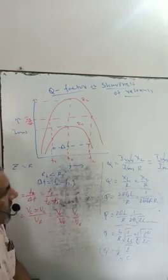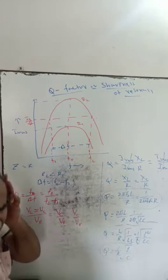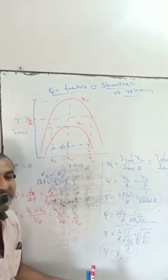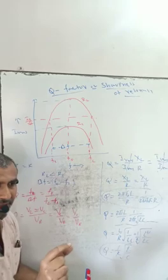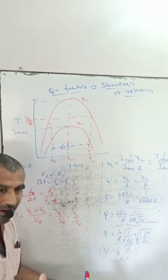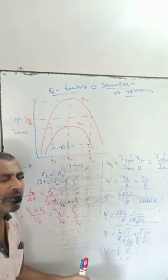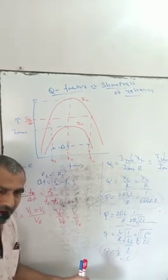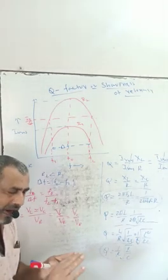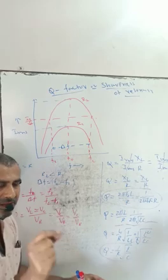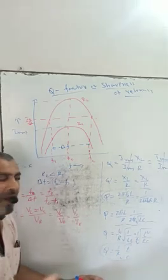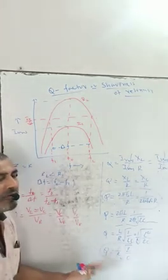A higher quality factor means higher sharpness of resonance in the resonance circuit. As a tuner, TV, radio, and telecommunication systems use high quality factor and high sharpness. The resonance circuit selects a particular frequency and completely filters out unwanted frequencies, allowing selection of a channel with clear audio and clear video. High quality resonant circuits are used in smart communication devices.